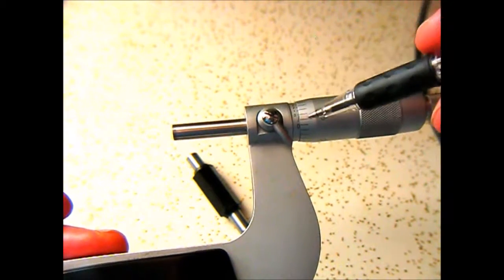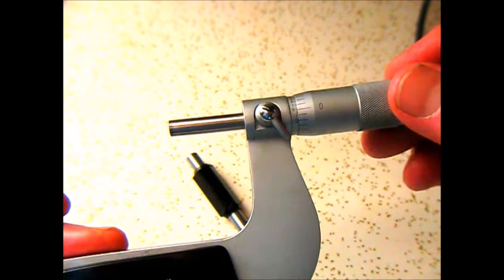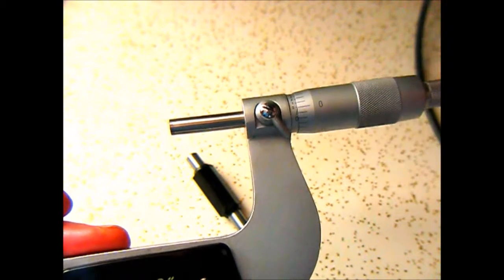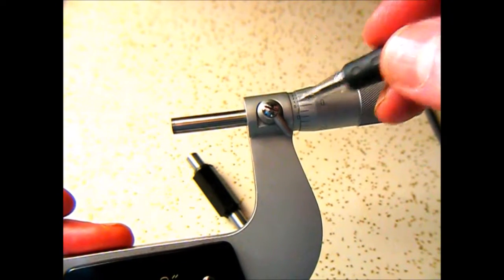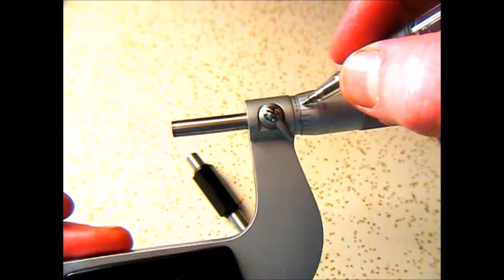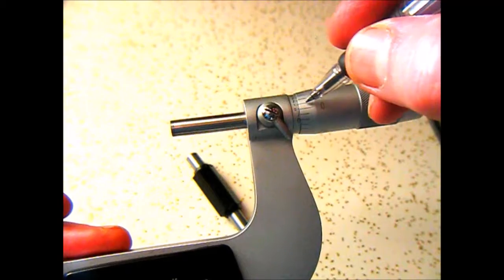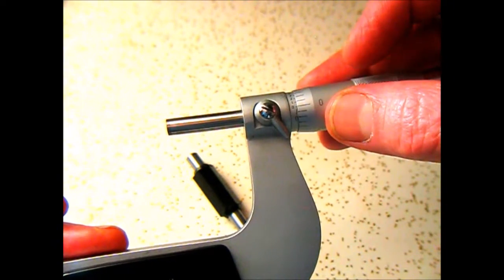Now this scale is the one-thousandth scale. So if we go back here to zero, now if you want to move it one ten-thousandth, you move it until the one lines up with the closest line, which would be right there.